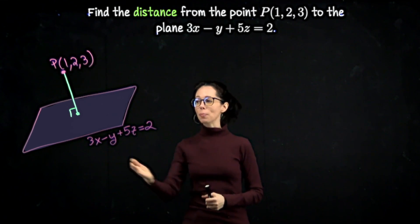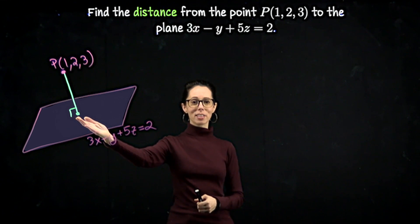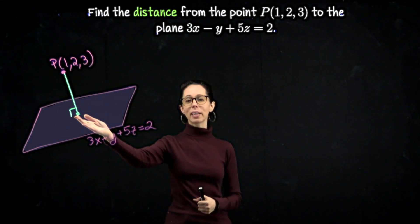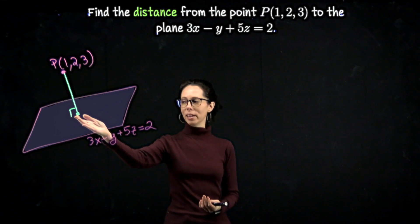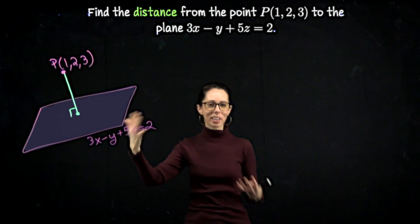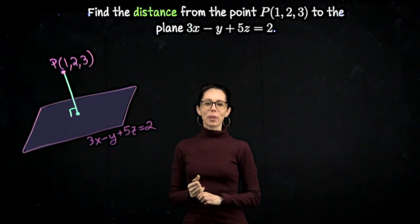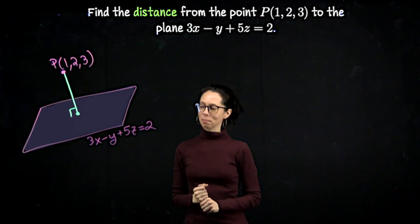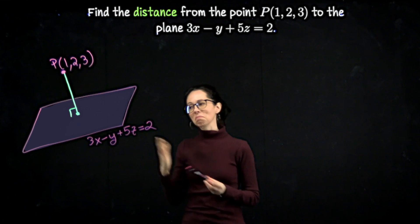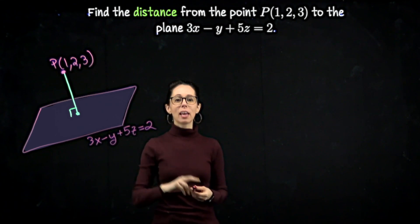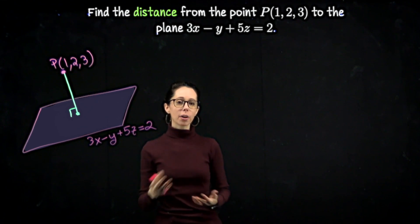All right, if I happen to know this point where this line segment is intersecting the plane, then I would basically be done, because I could use the distance formula, the classic one, to compute the length of this line segment. But we don't know that. So here's, I think, the next step. And that is to say, I don't know this point. Let me find any other point on the plane.